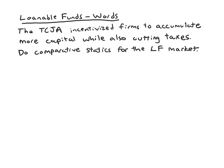The last thing we'd like to do is think about the loanable funds model in words. And in some ways we've been doing that already. We've been talking about how to interpret the diagram, how to interpret the algebra, and how the two are really representing the same thing. But now we're going to do a practice problem where we really have to interpret what's going on in the problem, just given in words, in terms of the model. So the problem says, the Tax Cuts and Jobs Act incentivized firms to accumulate more capital while also cutting taxes. Do comparative statics for the LF, loanable funds market.